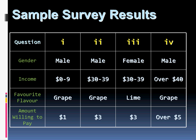Think about this: how many males, or the percentage of males, like grape-flavored juice? If you look for the correlation, you'll see that 100% of males like grape-flavored juice. So if you were targeting your grape juice, who would you target it towards? Well, hopefully you would say males. How about who is willing to spend $3? Both males and females are willing to spend $3, and both also like grape versus lime, so the favorite flavor doesn't determine the amount willing to pay. But what might determine the amount willing to pay is income — those earning $30 to $39 are also willing to pay $3 for their juice. That gives us much more information than just looking at the numbers on their own, and that's the power of correlations.